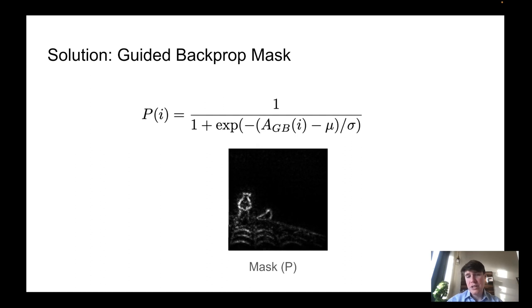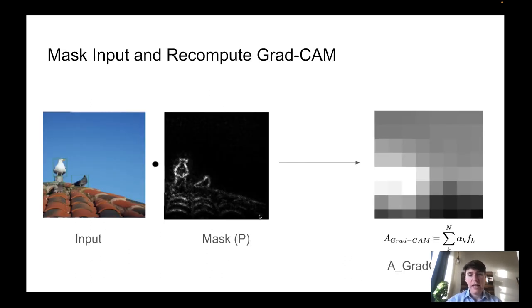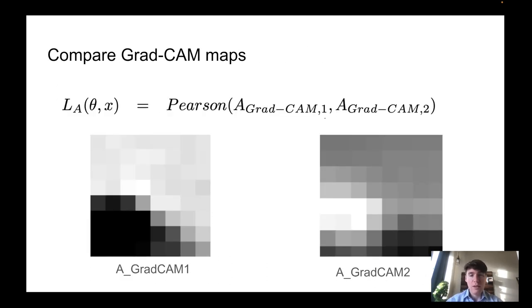So what we do is that we create a mask from this guided backpropagation map. And we use that to mask the inputs and put the masked input again through the network to create a second attention Grad-CAM map. Then we can much more easily compare the first and second Grad-CAM by vectorizing the image and using Pearson correlation.